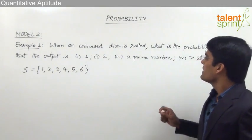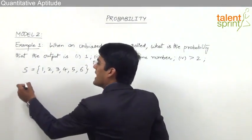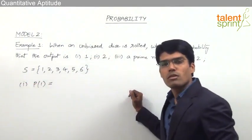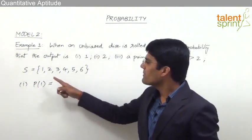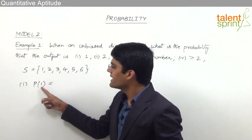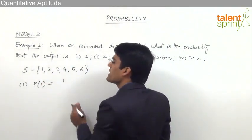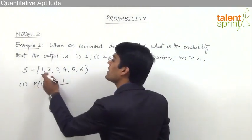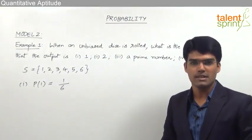The first question asks: what is the probability that the output is 1? We know that the probability of any event is the number of outcomes in favor of that event divided by the total number of outcomes. From the sample space, there is only one possible way of getting the output as 1, so the probability is 1/6.